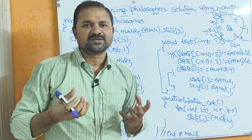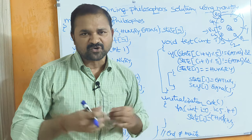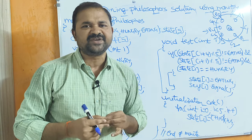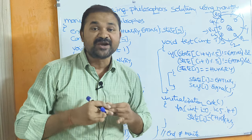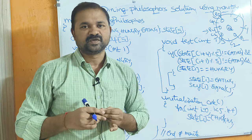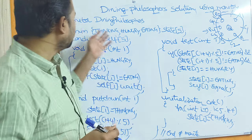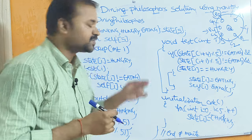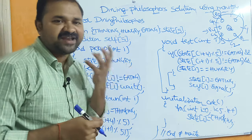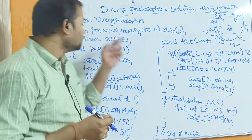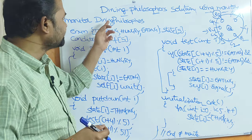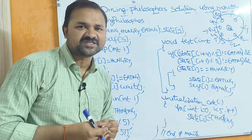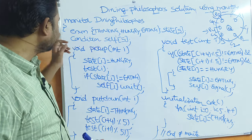A monitor is just like a semaphore. Monitors are mainly useful for achieving process synchronization. For defining the monitor, we use the keyword 'monitor' followed by the name of the monitor — here it is 'DiningPhilosophers'. Let us see the code.